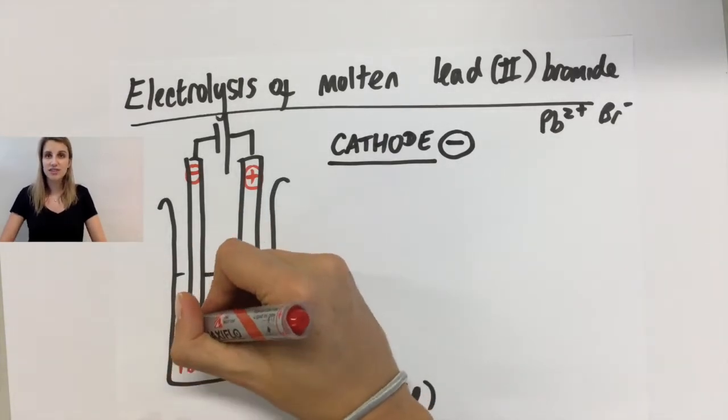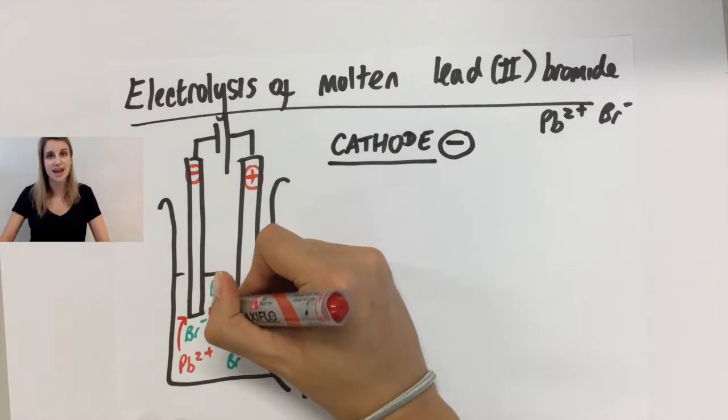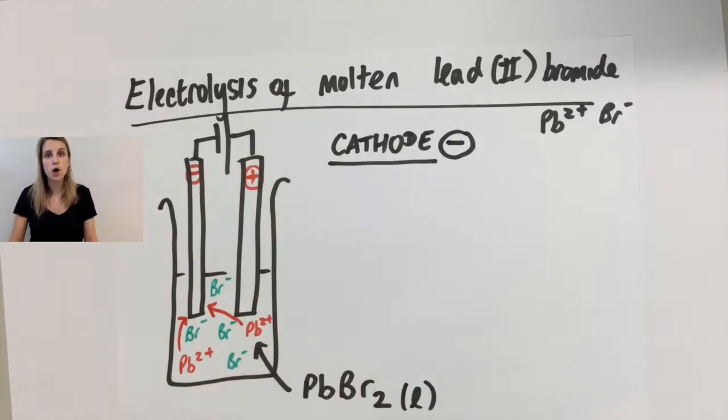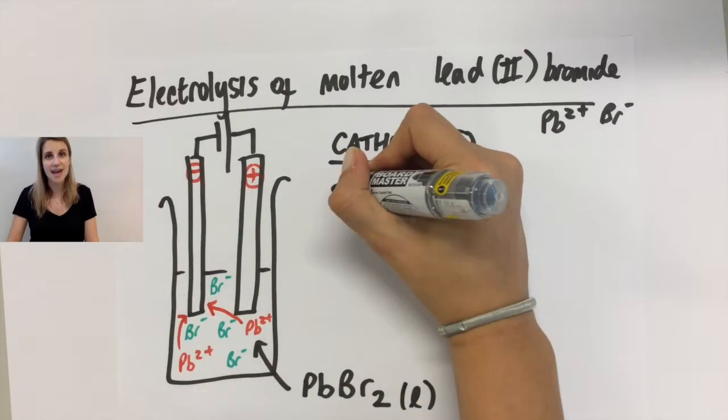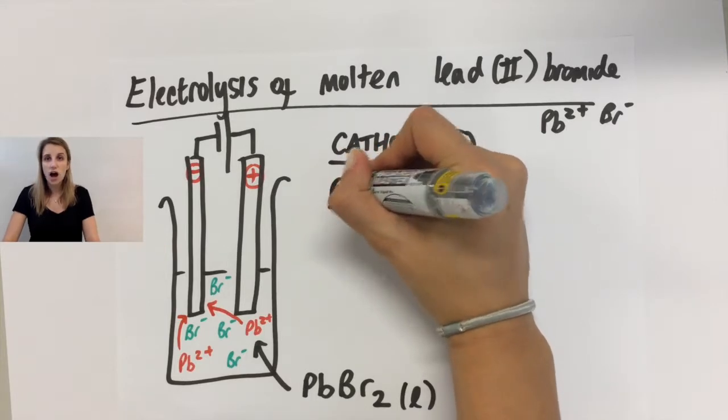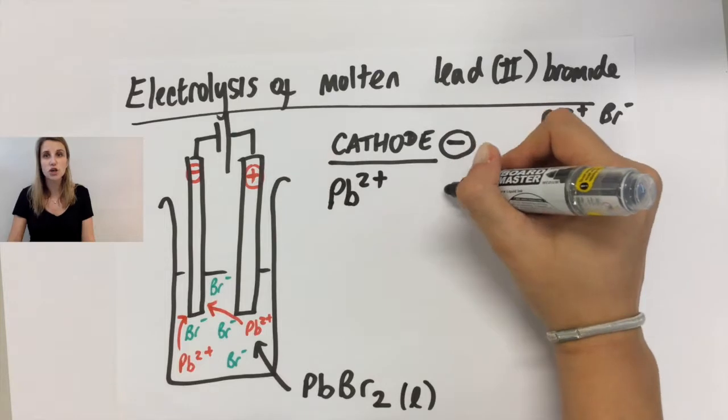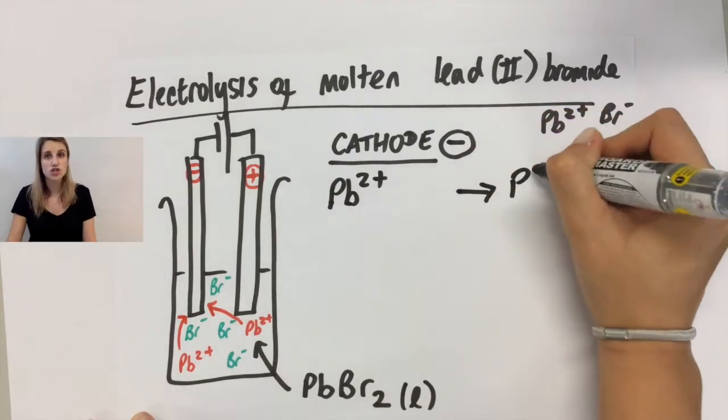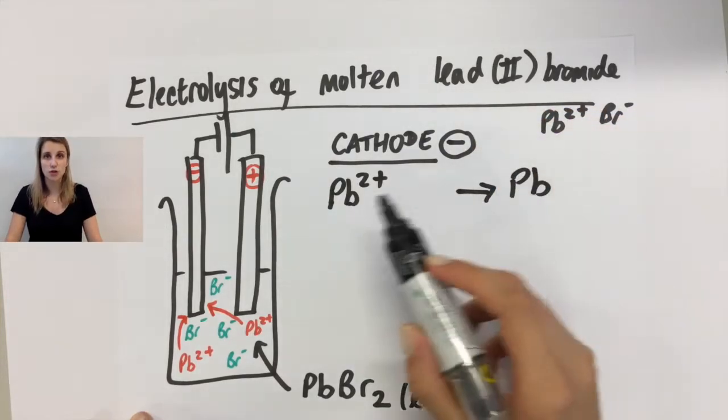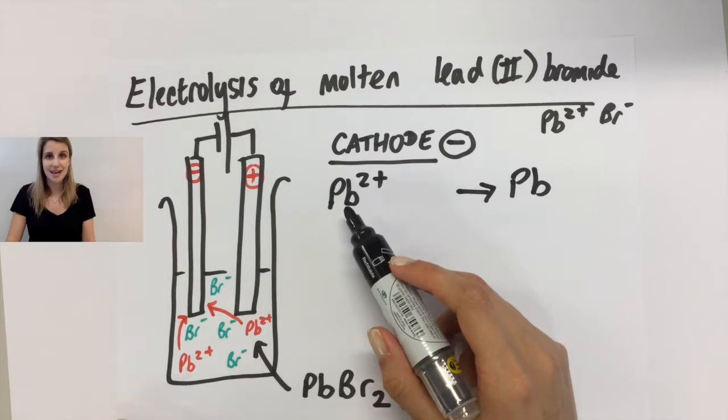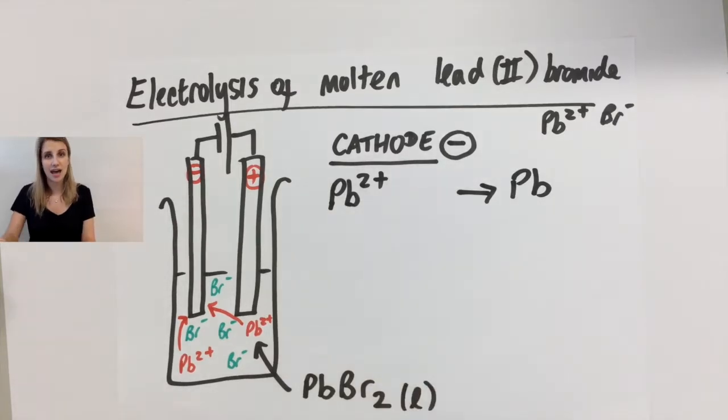So at the cathode, if we think about what's attracted to that negative electrode, it's the positive ions. And in this case, the positive ions are the lead ions, the Pb2+. So the Pb2+ is attracted to that negative cathode. When it gets there, it turns into its element.